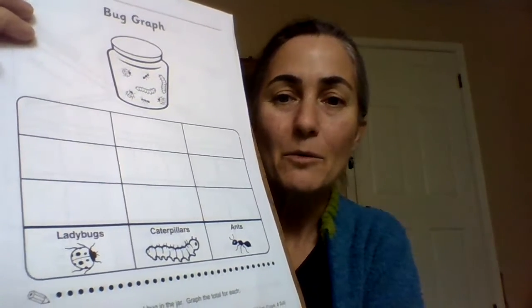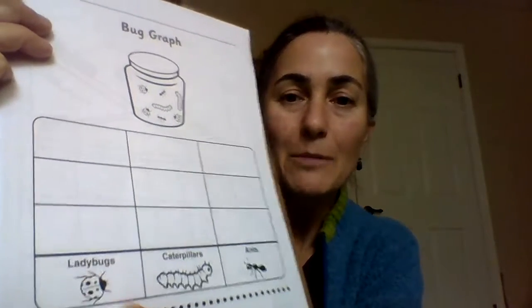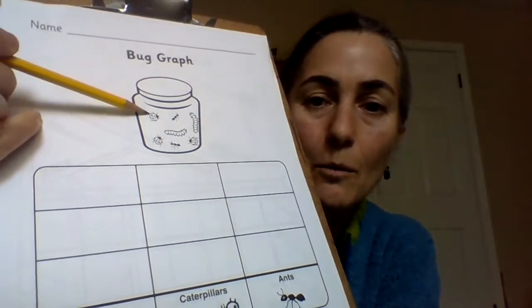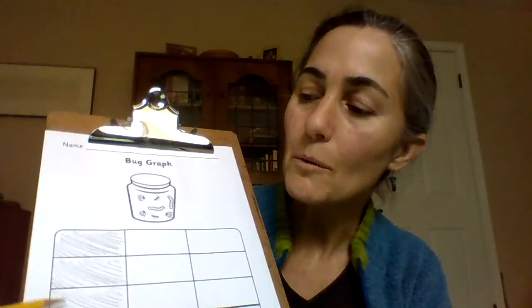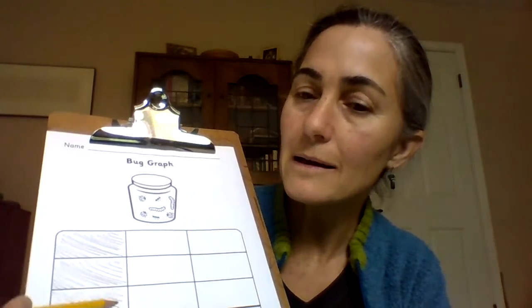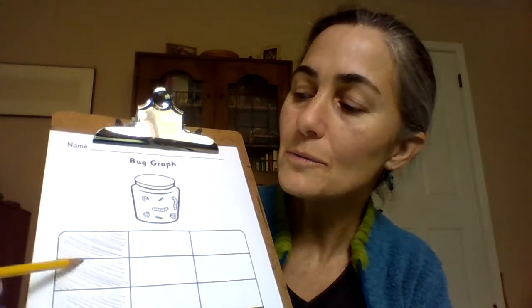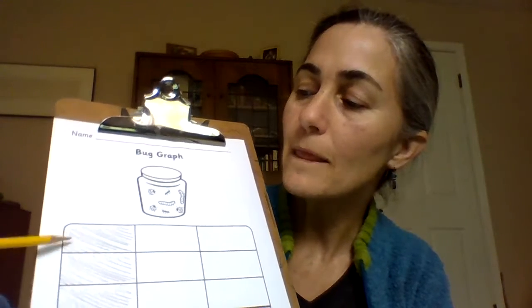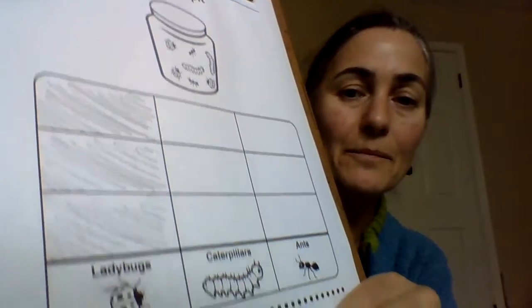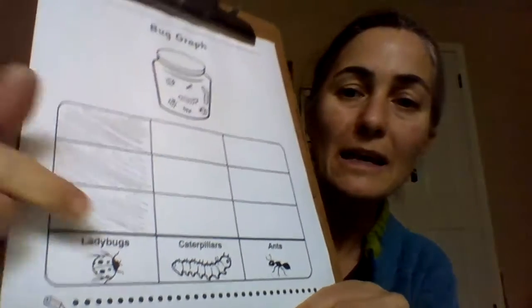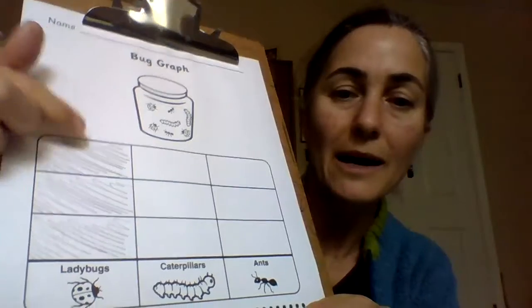So right here, we're going to count the ladybugs first. One, two, three. Do it with me: one, two, three. You can do it in color and it really shows up. Three ladybugs is a bar three units high.